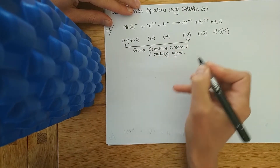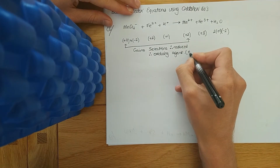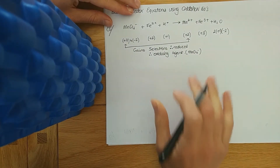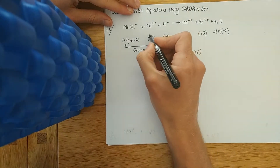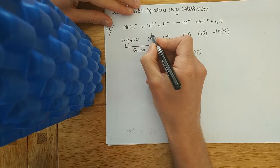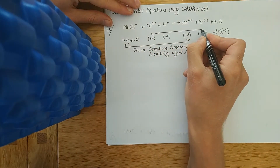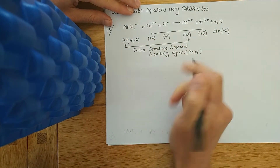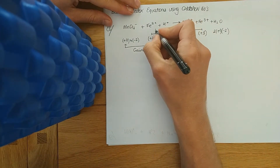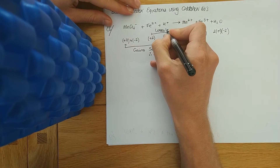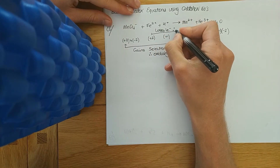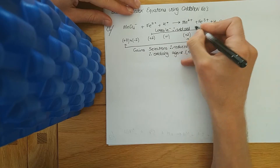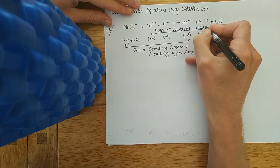If they ask you for the oxidising agent, write down MnO4⁻. Iron has gone from Fe²⁺ to Fe³⁺ — that's an increase in oxidation number, so it loses one electron, therefore it's oxidised, therefore it's the reducing agent.